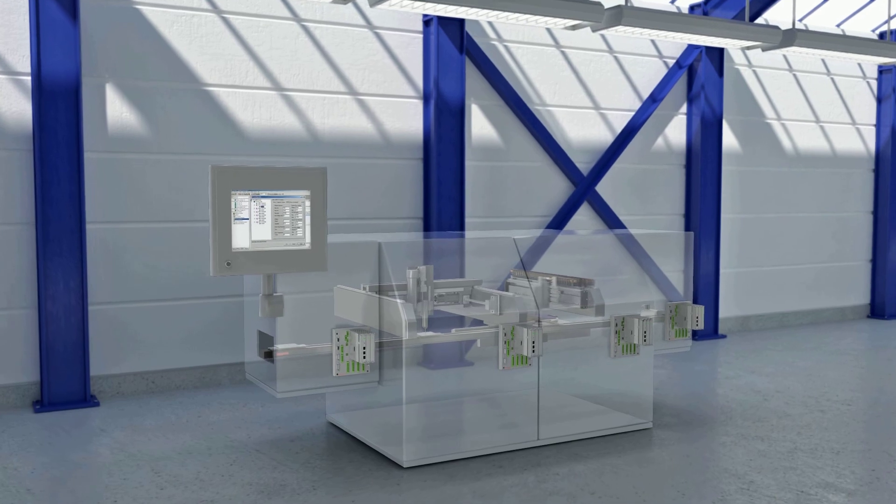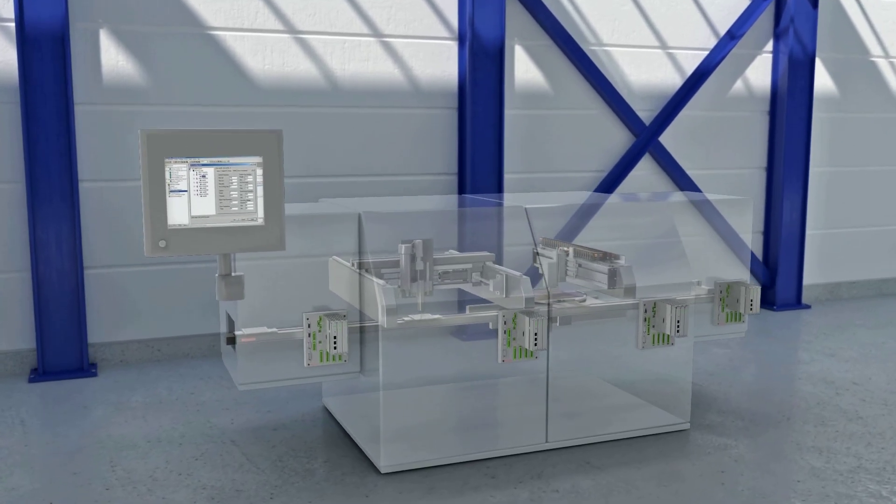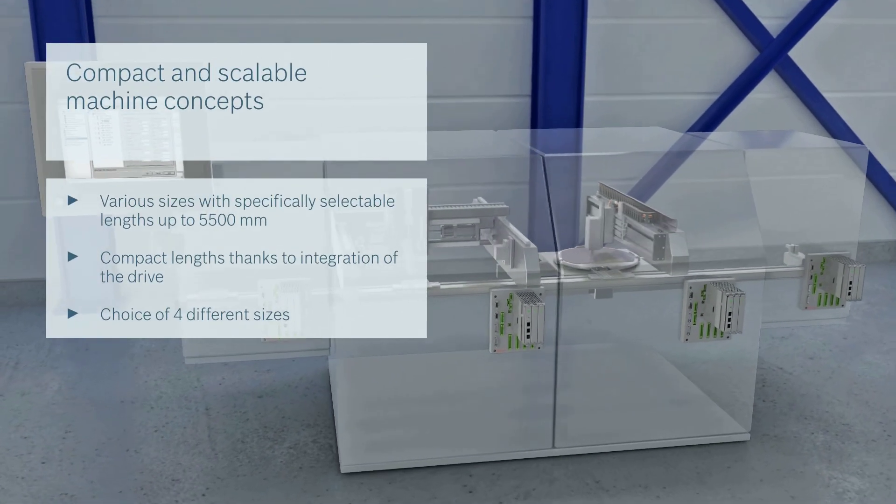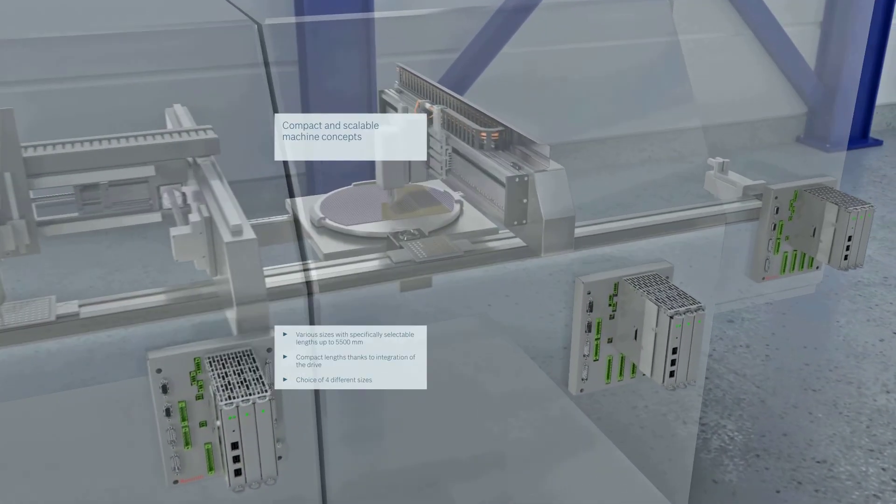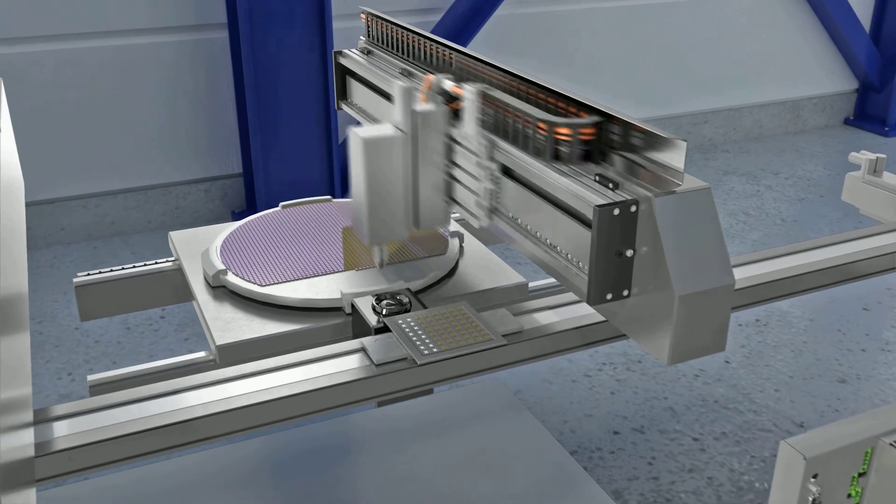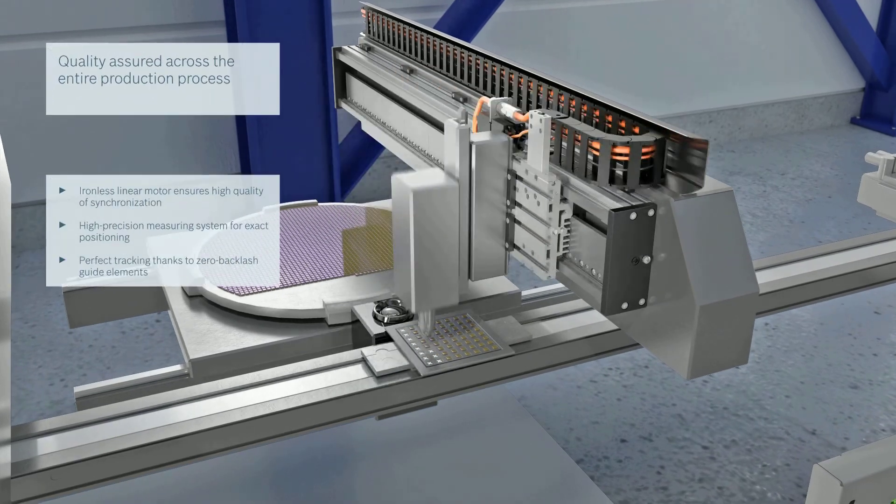Looking for a linear module that offers outstanding dynamism and excellent positioning behavior but need to keep an eye on the total cost of ownership? Then you need to take a closer look at the CKL compact module with ironless linear motor from Rexroth.